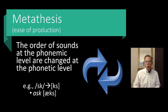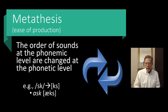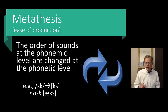Metathesis is where the order of sounds at the phonemic level are changed at the phonetic level. This tends to be an ease of production process — there are certain patterns that are easier to pronounce and some that are harder. The S-K consonant cluster is harder for us to pronounce than the K-S cluster, so the word 'ask' often gets changed to 'axe'. Instead of saying 'ask', you would say 'axe': 'I got to axe you a question'.